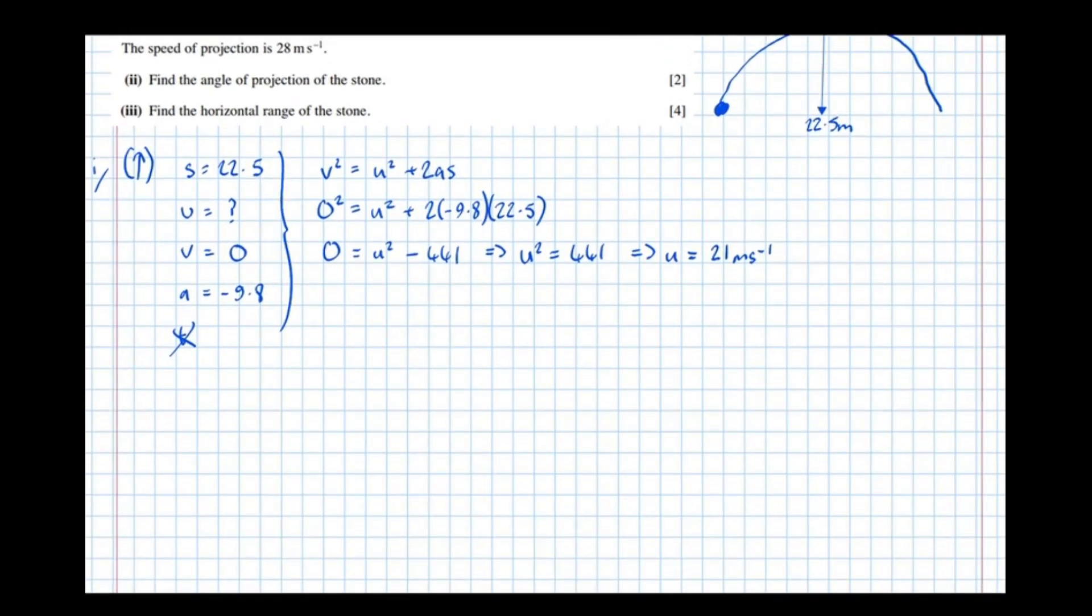So we've got that. So part two, it said the speed of projection is 28 metres per second to find the angle of projection of the stone. Well, first of all, we've got the vertical component is 21 metres per second. We don't know the horizontal, but we do know the resultant. So if we represent this using a diagram, we don't know the horizontal. We do know the vertical, and also we do know the resultant.